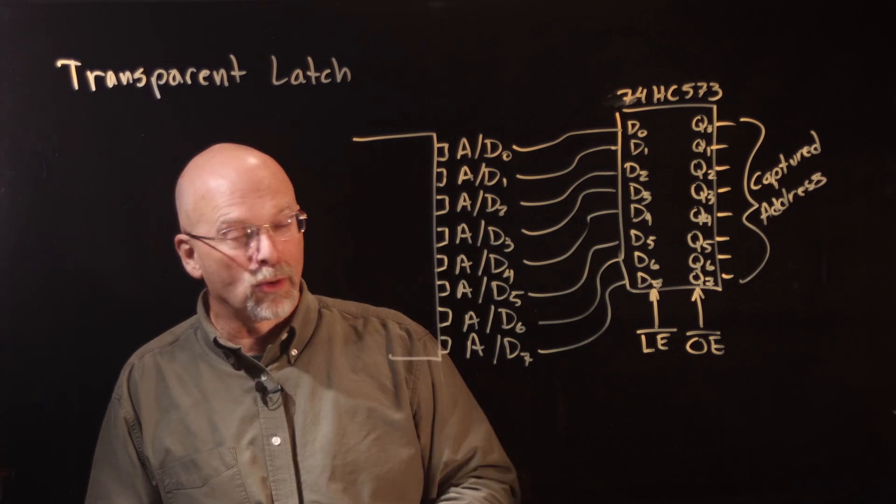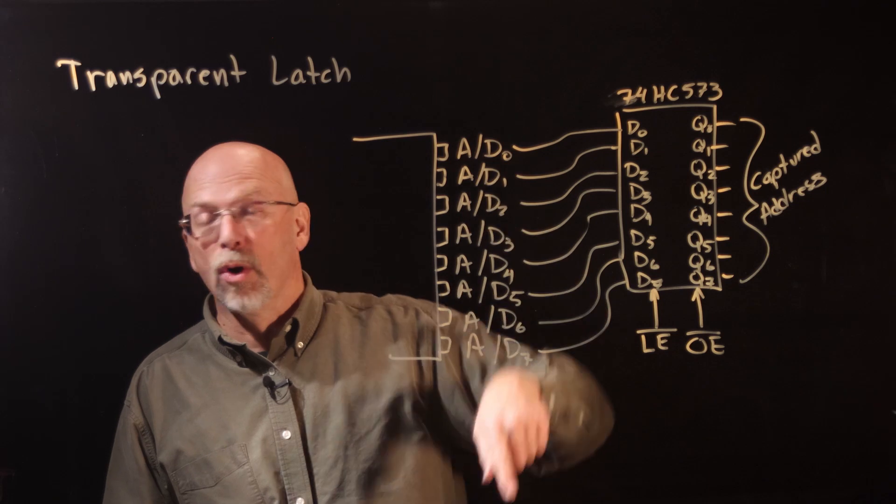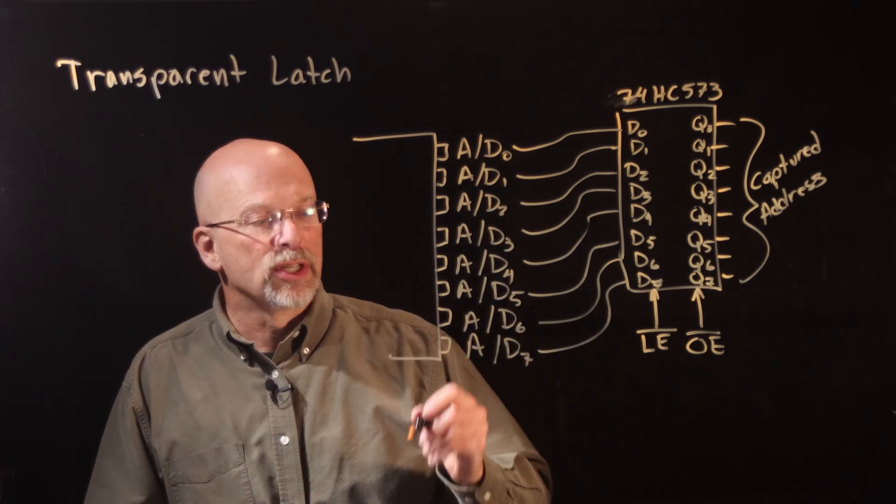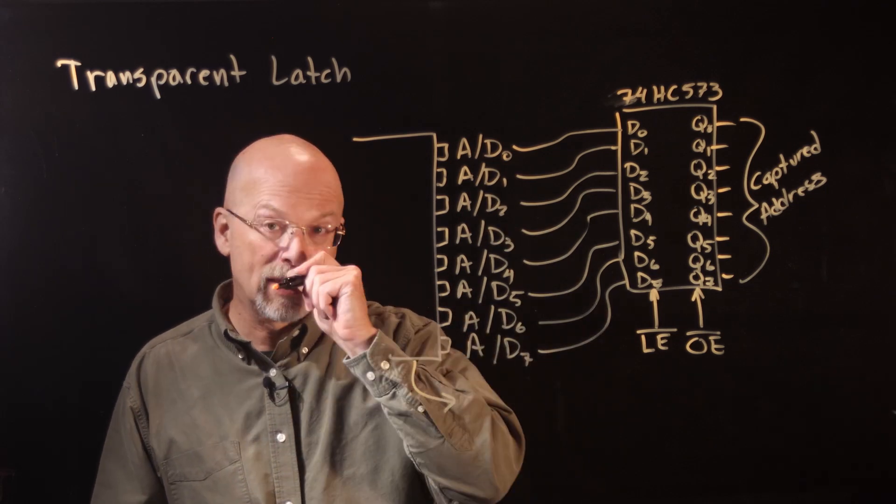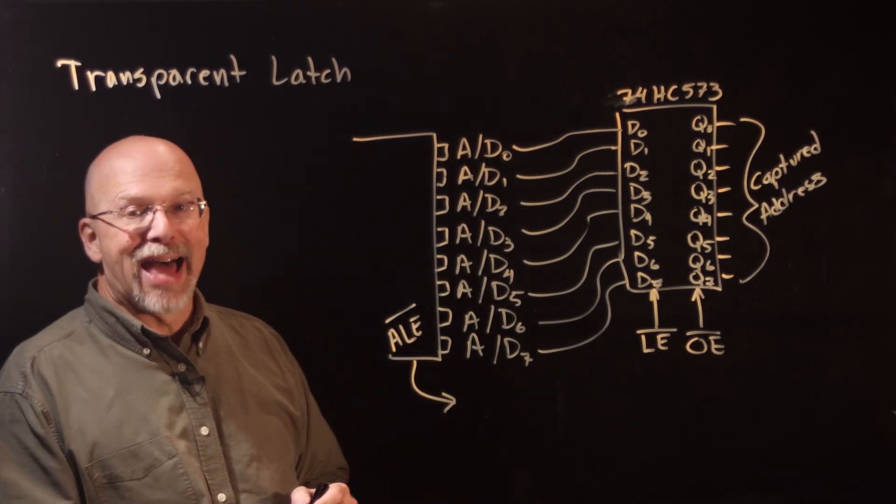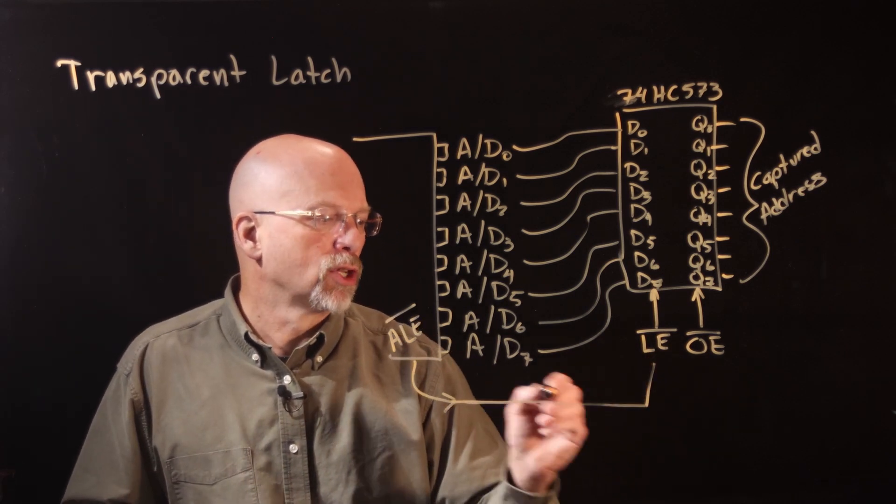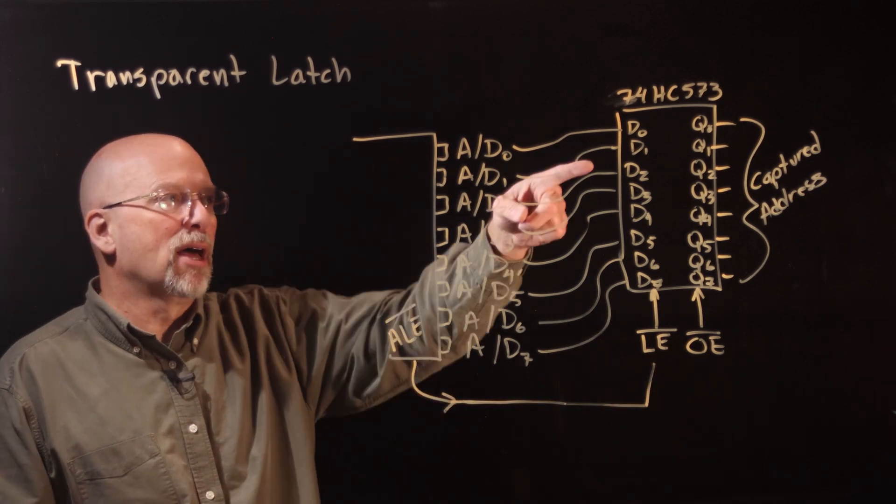Now we're missing one key component, because the microprocessor, and only the microprocessor, knew whether it was displaying address on here or data on here. And so there was an additional output coming out of the microprocessor that was ALE (Address Latch Enable), and you simply connected that to the latch enable of this chip.